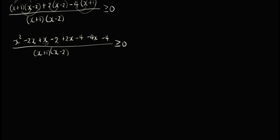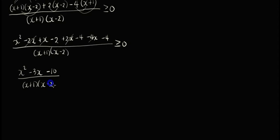Let's simplify the numerator — let's combine like terms. We have x squared. Negative 2x, x, positive 2x — these cancel out, so we're left with x minus 4x, giving us negative 3x. Then negative 2, negative 4, negative 4 — that's negative 8 minus... negative 10. So we have x squared minus 3x minus 10 over x plus 1 times x minus 2, is greater than or equal to 0. This numerator is factorable — that's x minus 5 times x plus 2.